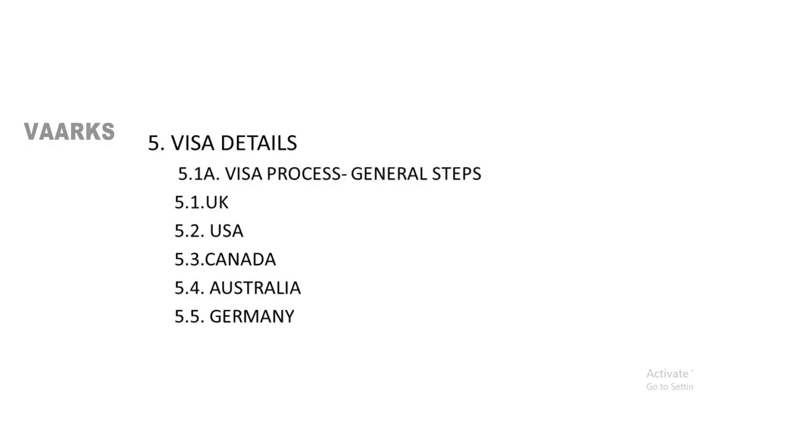Finally we move on to the visa details section. In the first section I will give the general steps for any visa process — general steps mainly required for any type of visa application. It includes the details of visa for UK, US, Canada, Australia and Germany. With this, the content section is finished. These content sections are dealt with in detail in the video series on PhD career options in civil engineering.